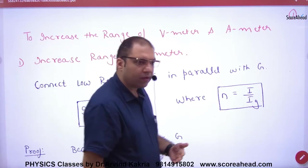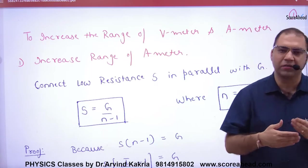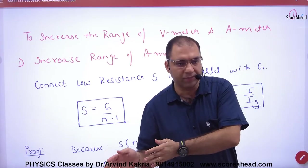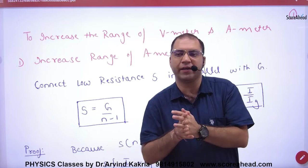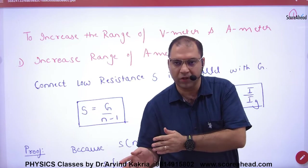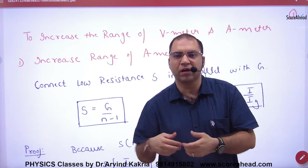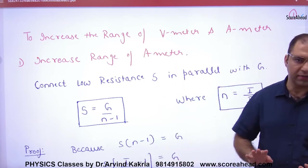In galvanometer, we discussed that if we want to make it an ammeter, then we put in parallel low resistance shunt. And if we want to make it a voltmeter, then we put in series high resistance R. We discussed this last time.